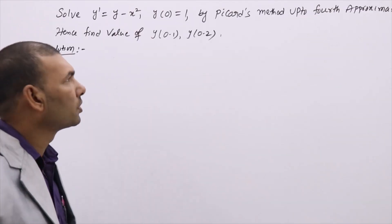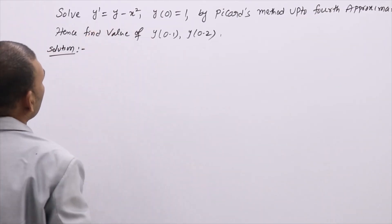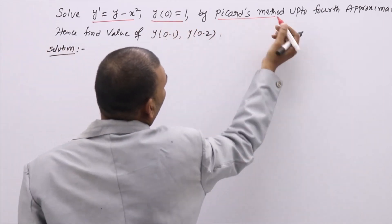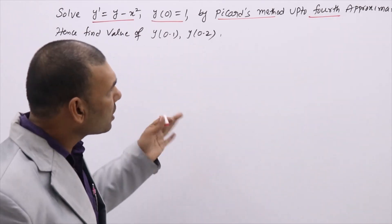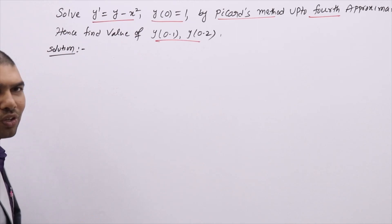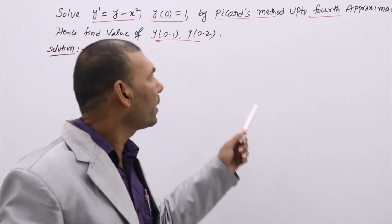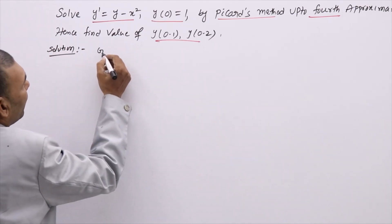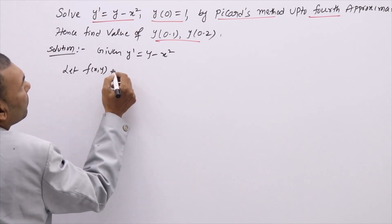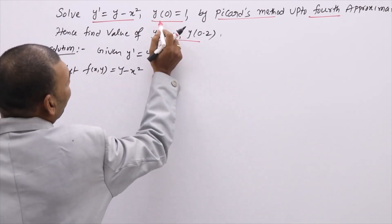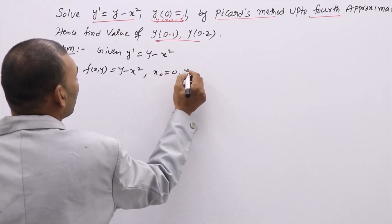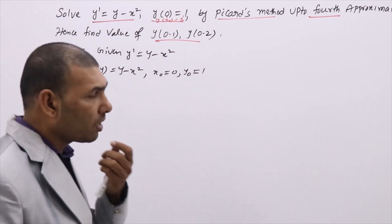Using Picard's method, solve the differential equation y dash equal to y minus x squared, with initial condition y(0) equal to 1, given Picard's method up to the fourth approximation. After finding the fourth approximation, treating it as y(x), we need to find y(0.1) and y(0.2). First, note down what is given: y dash equal to y minus x squared, which we treat as f(x, y). Comparing with y(x₀) equal to y₀: x₀ equal to 0, y₀ equal to 1.